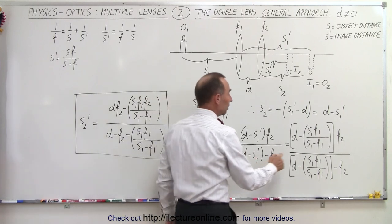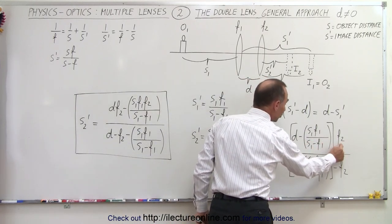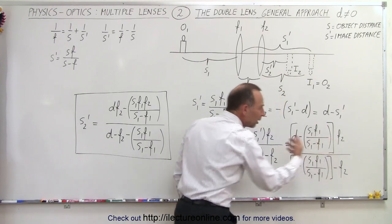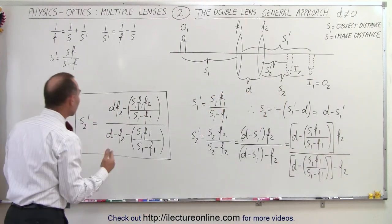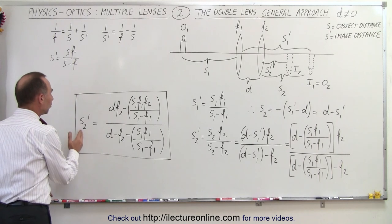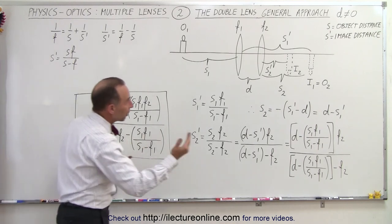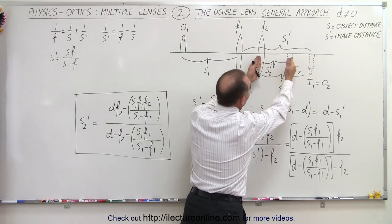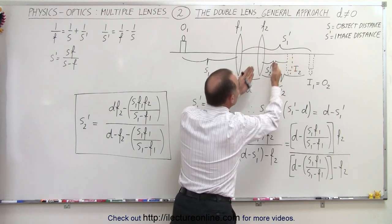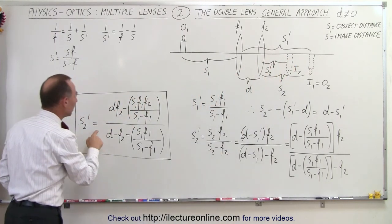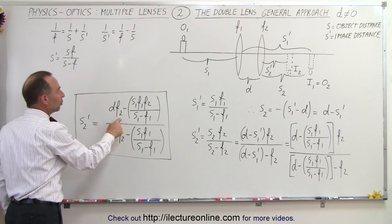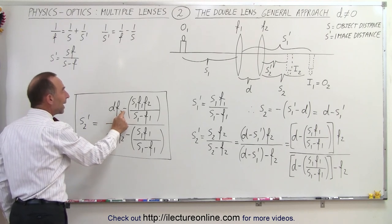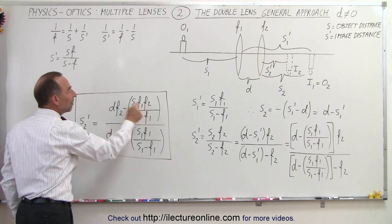In the numerator, this quantity is multiplied by f2; in the denominator, we have minus f2. Cleaning that up algebraically, we get the general equation for s2': the distance to the second image equals d·f2 minus s1·f1·f2. In the numerator, multiplying f2 by d gives d·f2, and multiplying through gives s1·f1·f2 divided by (s1 minus f1).